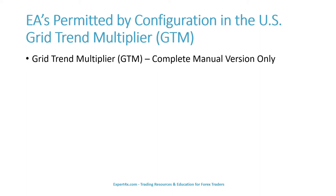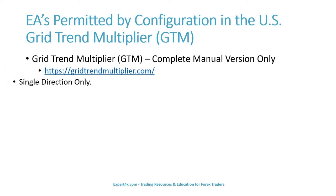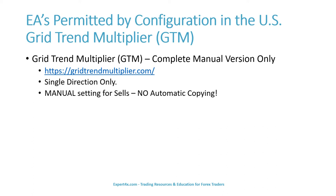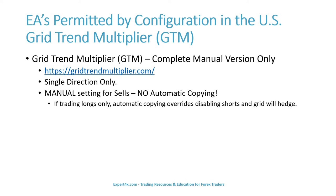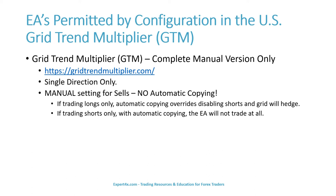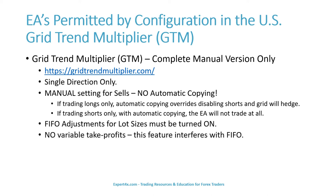In the United States, the complete manual version only is the EA that must be traded. It must be traded in single direction only. Manual settings must be used for sales — no automatic copying. If you are trading longs only, automatic copying overrides your disabling of shorts and the grid will hedge. If you are trading shorts only with automatic copying, the EA will not trade at all. FIFO adjustments for lot sizes must be turned on. No variable take profits — this feature interferes with FIFO.